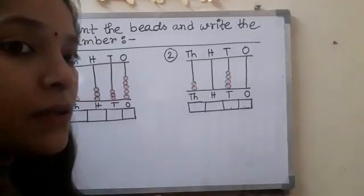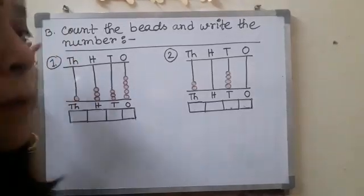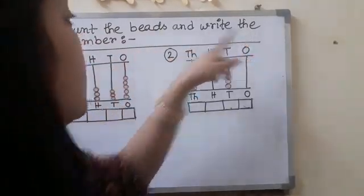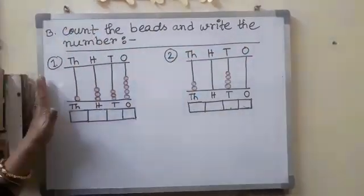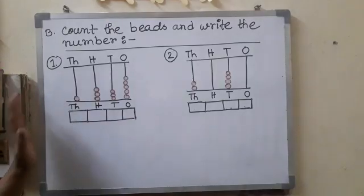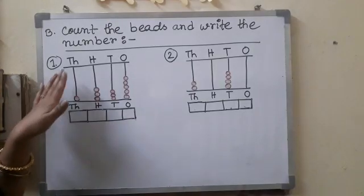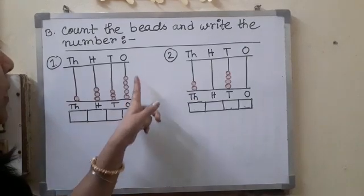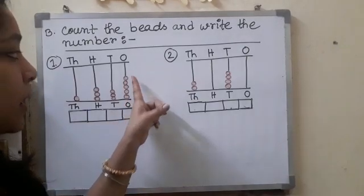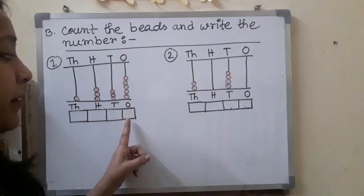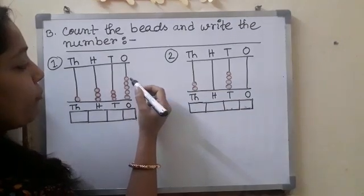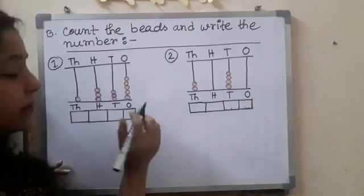Okay, now we learn about the next topic: count the beads and write the number. Here you can see the first question. You can see here some beads, right? First we have to count the beads and write the number here. So one, two, three, four, five. Here we have five beads.